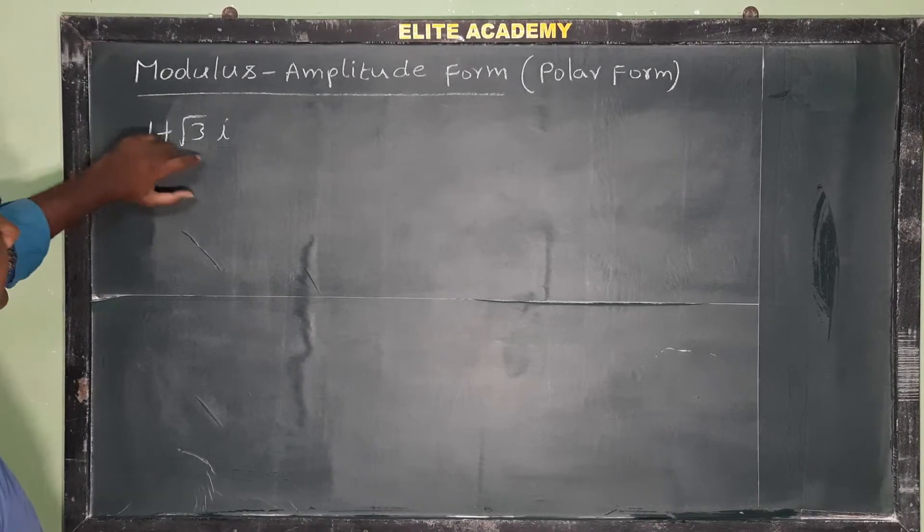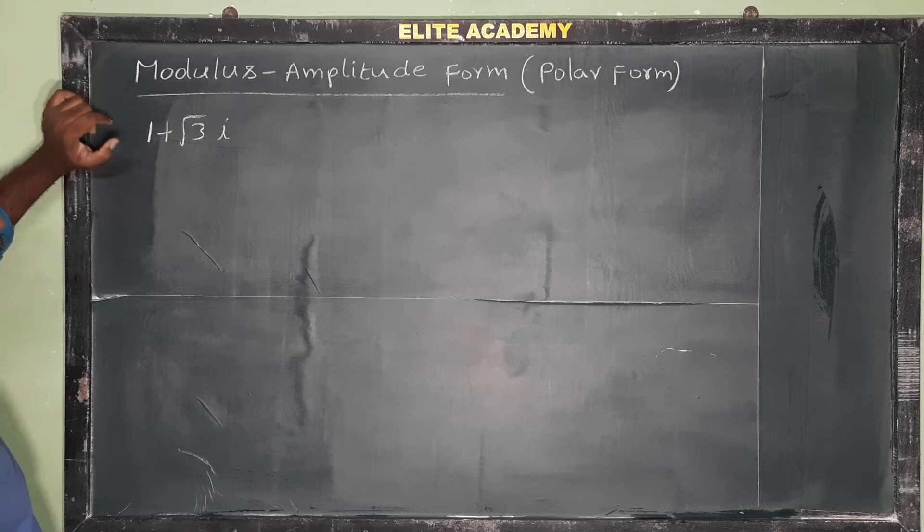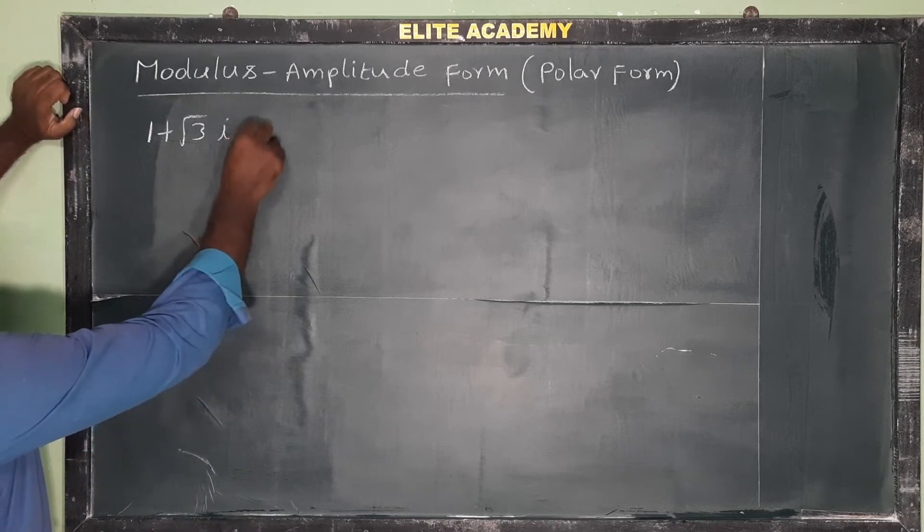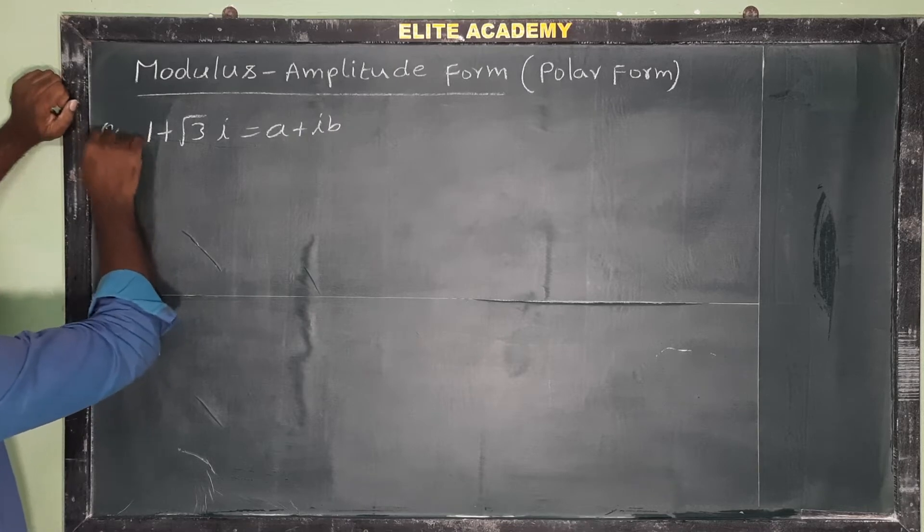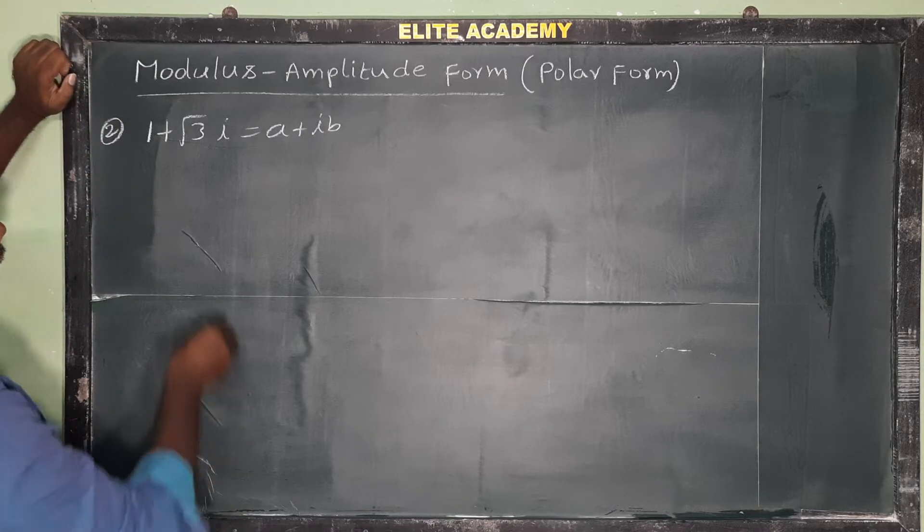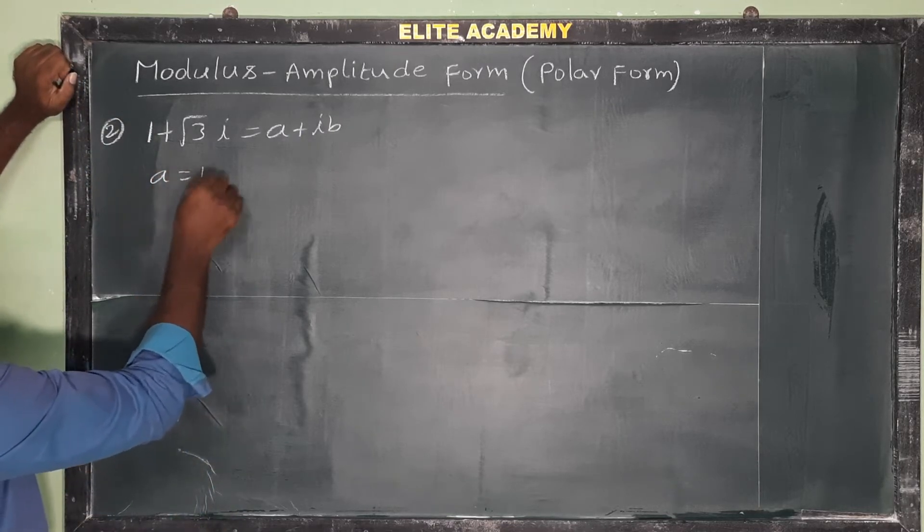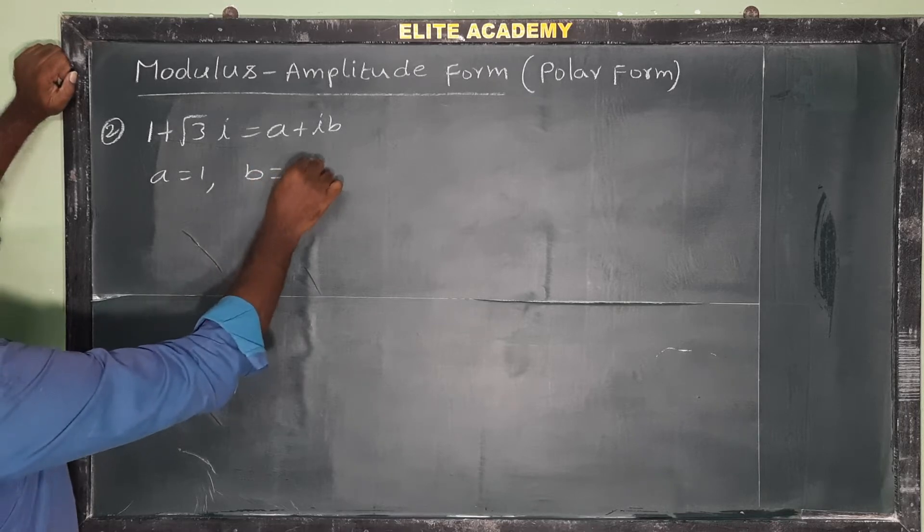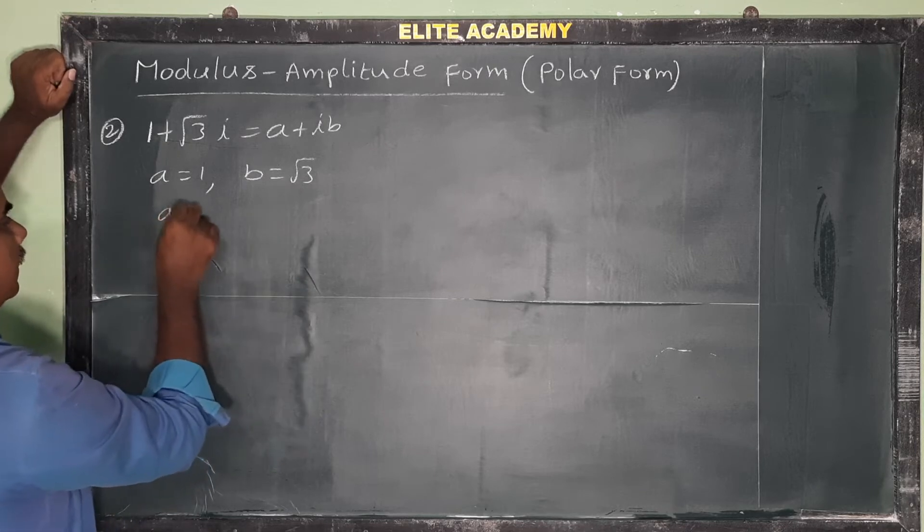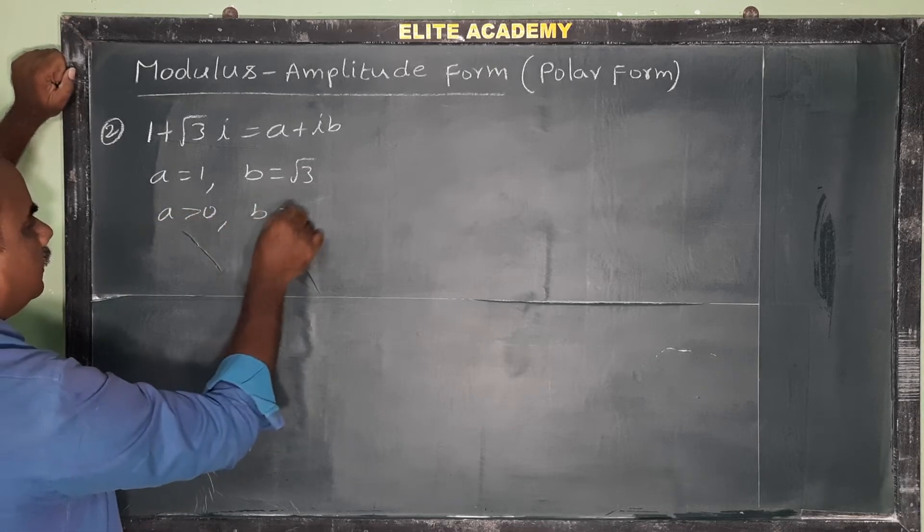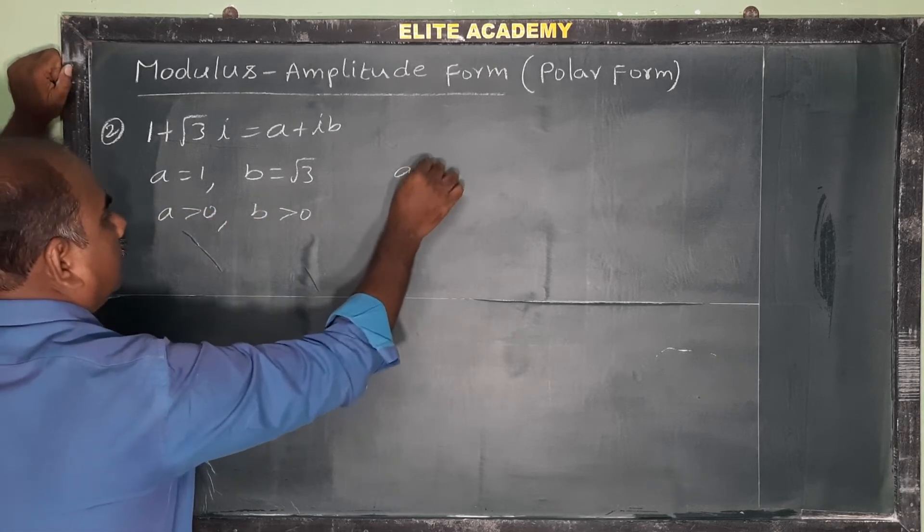We have to convert 1 plus root 3i into polar form. When we compare with a plus ib form, we get the values a is equal to 1 and b is equal to root 3. So both are greater than 0.